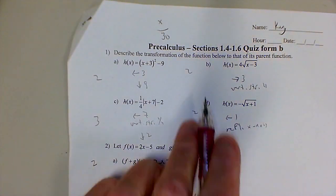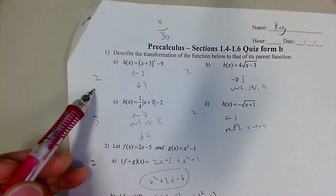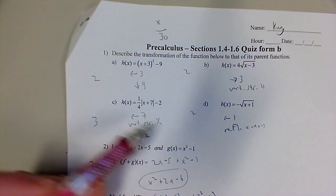Okay, so this is the key for the sections 1.4 to 1.6 quiz, form B. You can see the point values here, which correspond to what you saw in your comments.